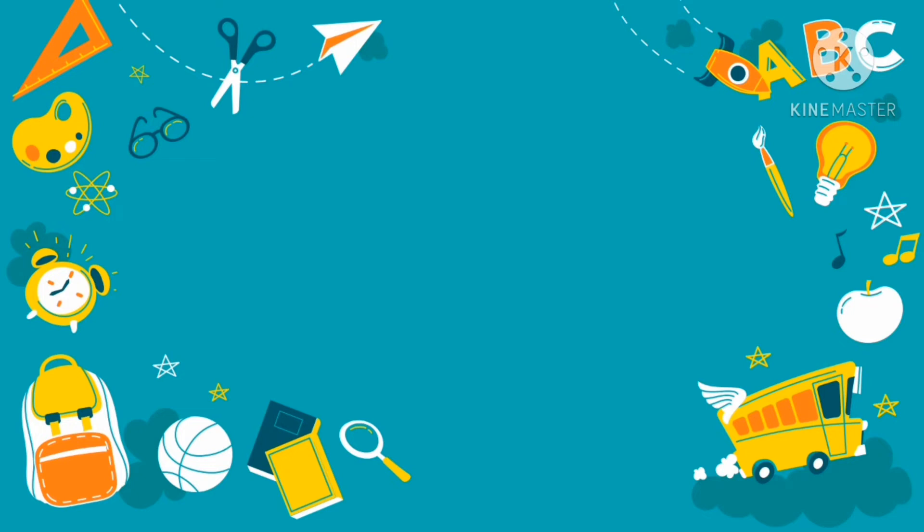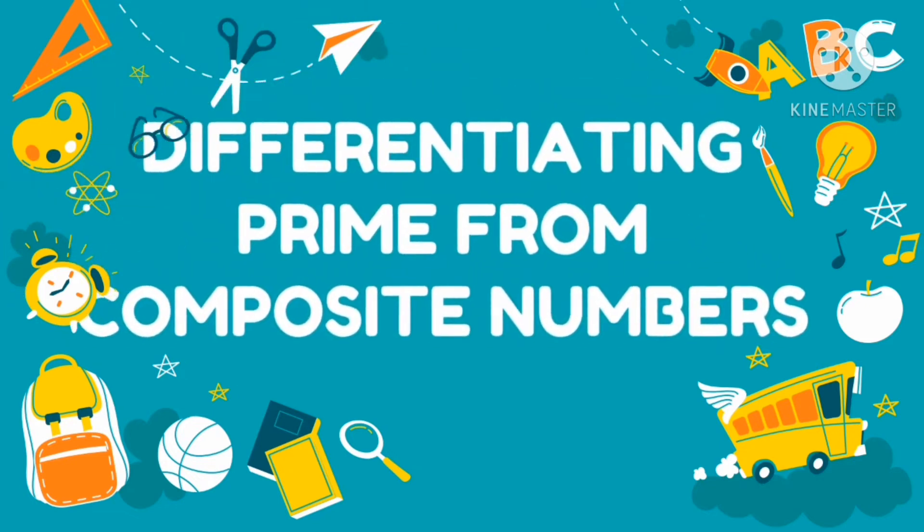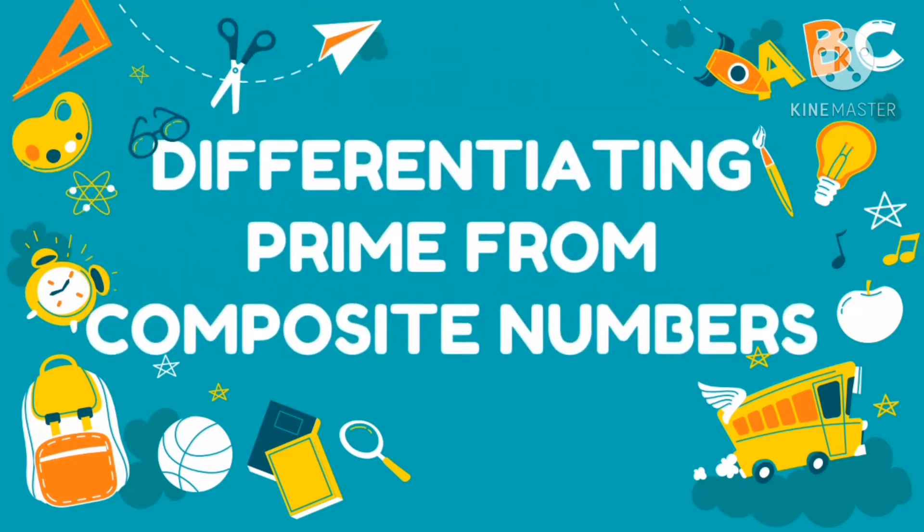In the previous lesson, you have learned how to identify factors and multiples of a given number at 2100. So this time, I will discuss to you the difference between a prime number and a composite number. And this topic is about differentiating prime from composite numbers.